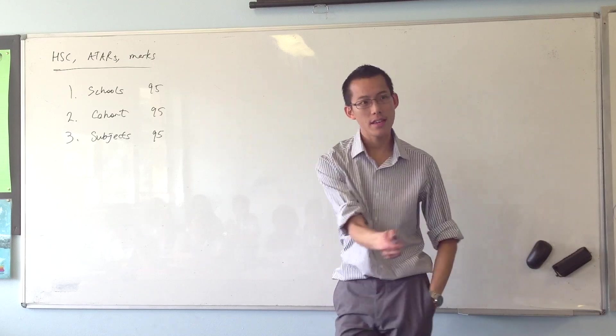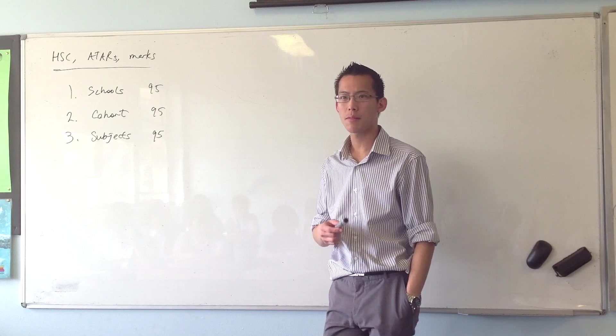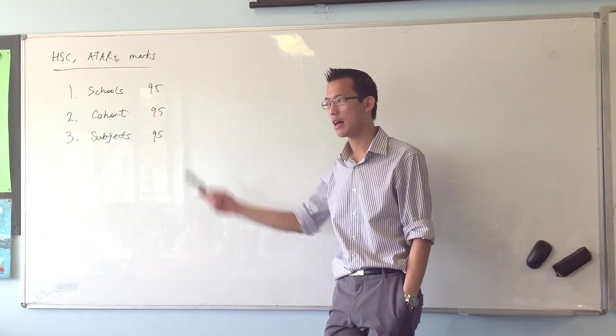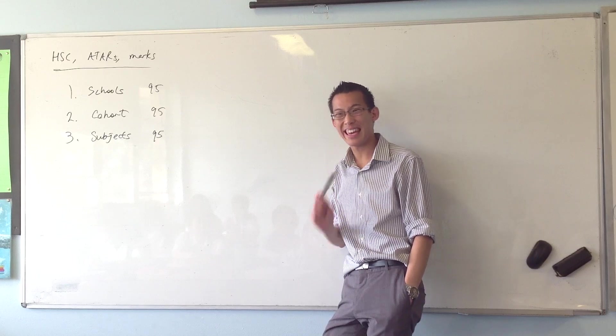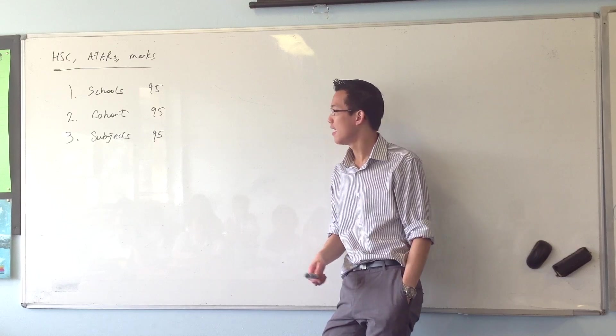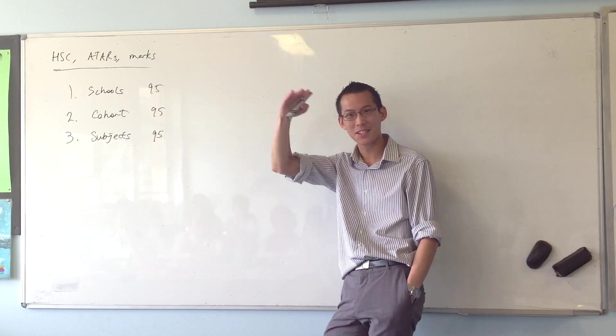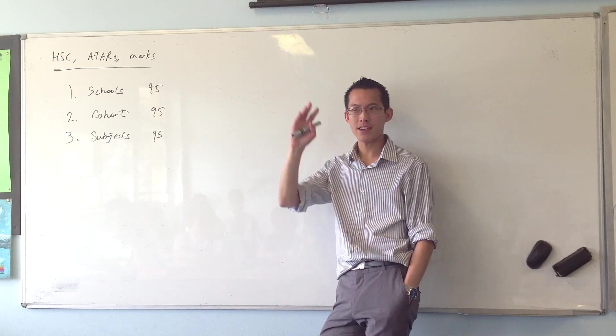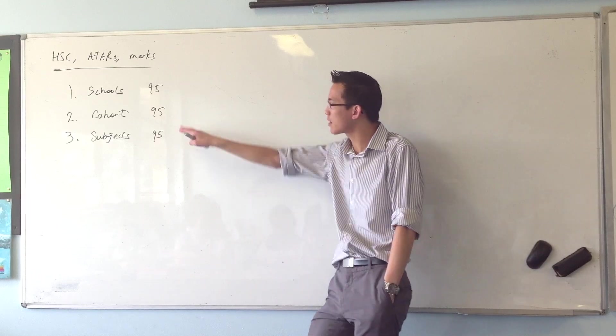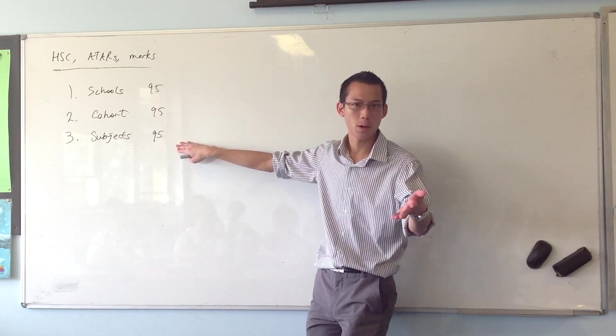In the same way, this year, if you guys get 95, how can you compare that to a 95 from last year? What if your exam turns out to be a killer? It's terrible. And you guys get 95, you know, Jonathan Zeng or something, by blood, sweat, and tears, he scores that. Whereas maybe last year or next year, the exam's just a breeze and half of you get 95. Well, how can you compare the two 95s? You're seeing where I'm going here.